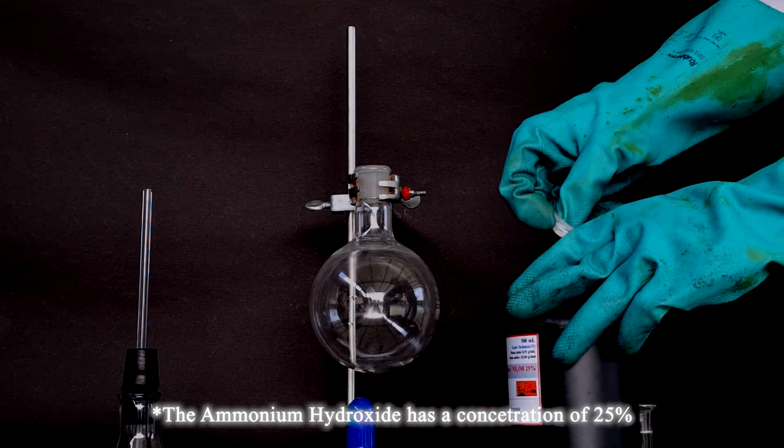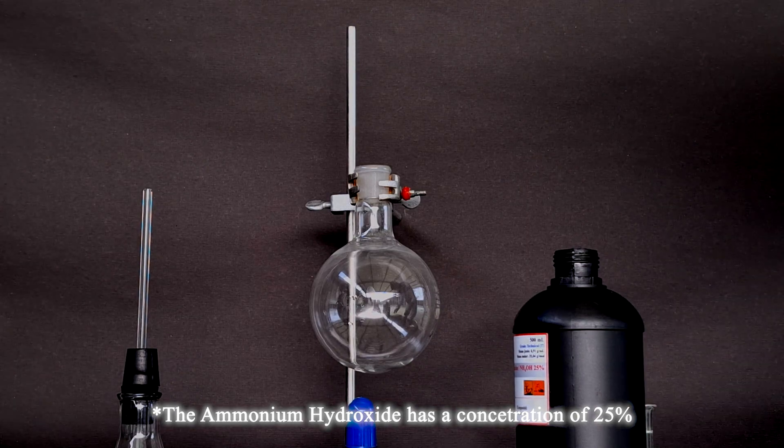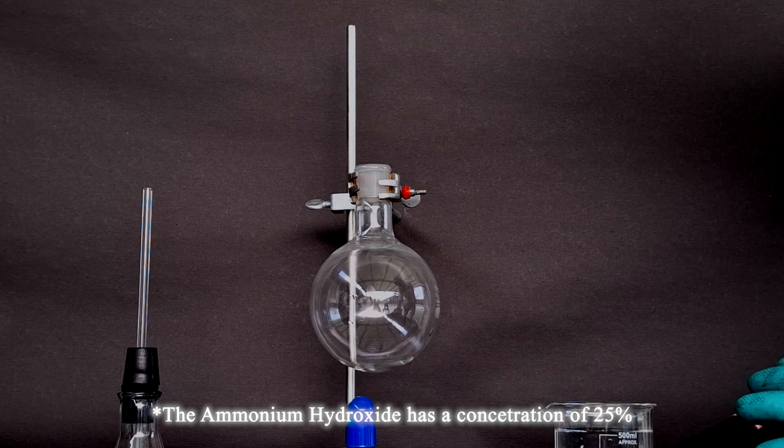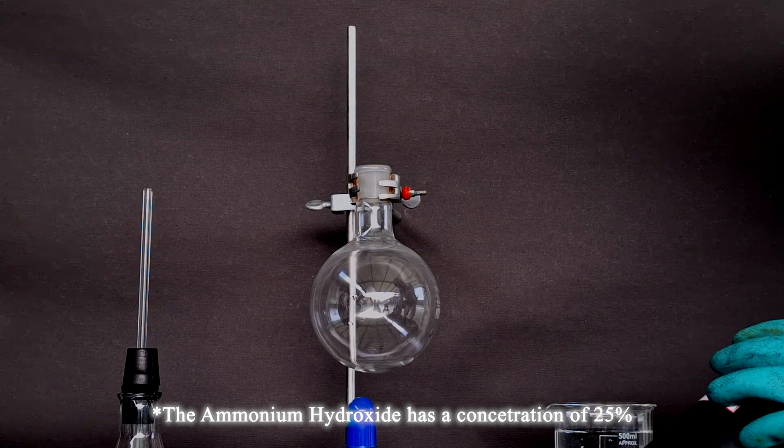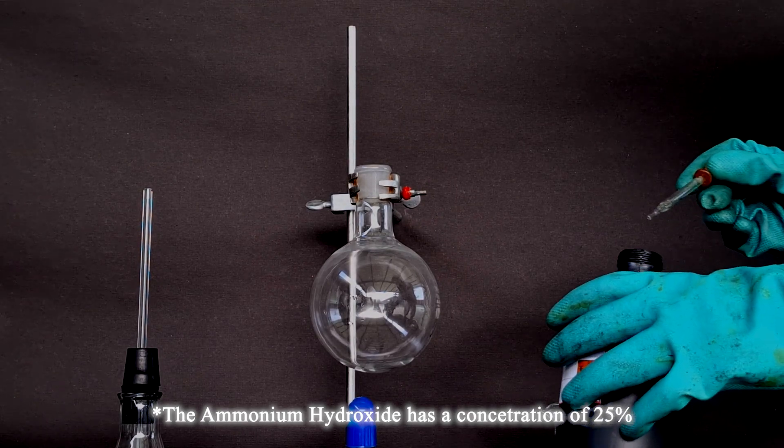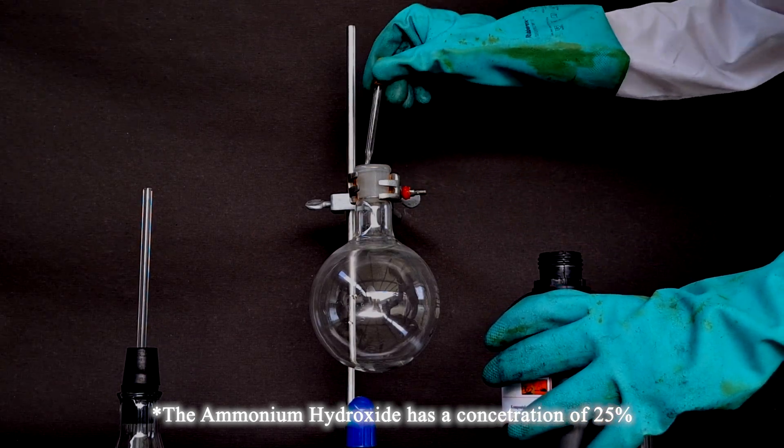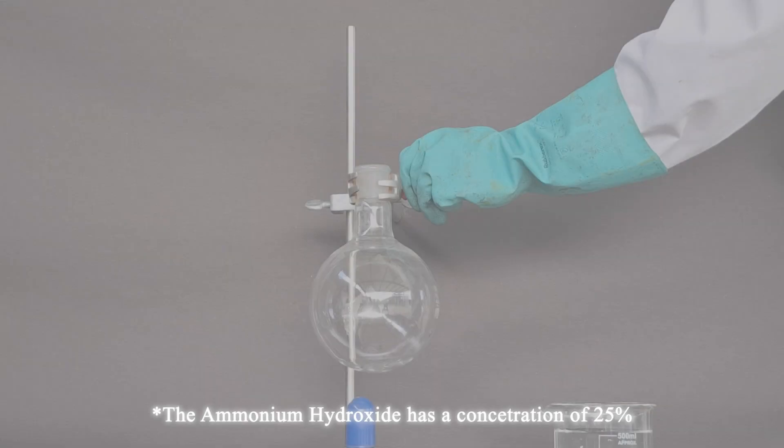After performing stoichiometric calculations, I determined that 6ml of ammonia should be introduced into the spherical boiling flask. It is vital to avoid adding an excessive amount, as this would result in excessive pressure accumulation within the flask, potentially leading to the explosion of the bung.